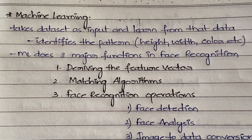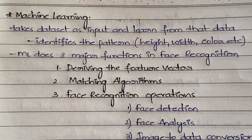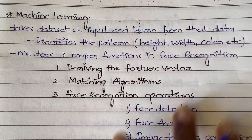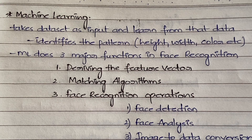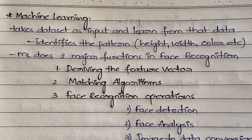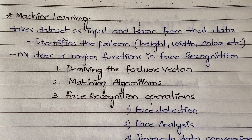In machine learning, it takes a dataset as input, learns from that data, and whenever we ask a question, based on what it has learned it gives a response. In the context of face recognition, it identifies patterns such as the height of the face, the width, the color, the colors of lips and nose, and the distances between facial organs — nose, lips, cheeks, and eyes — capturing and storing all those features.